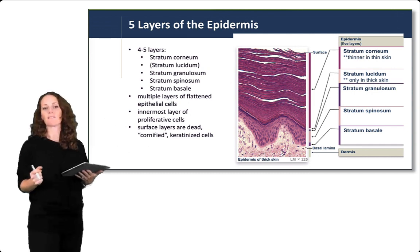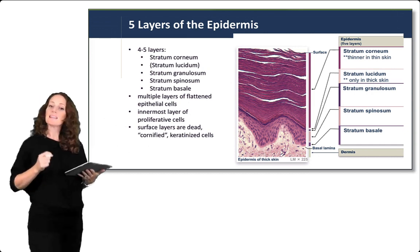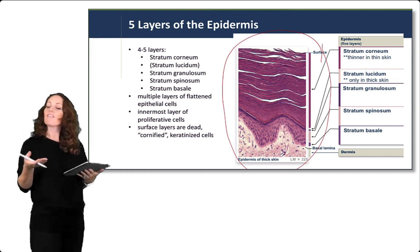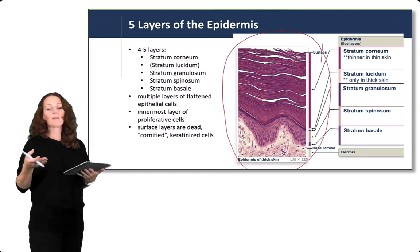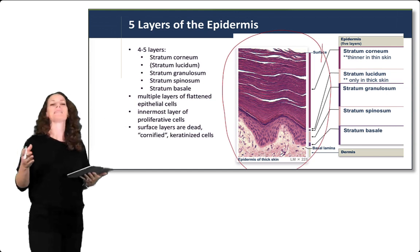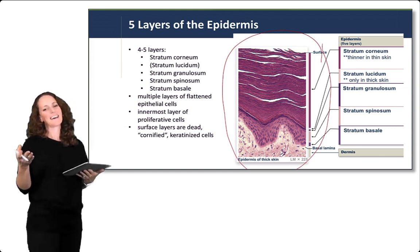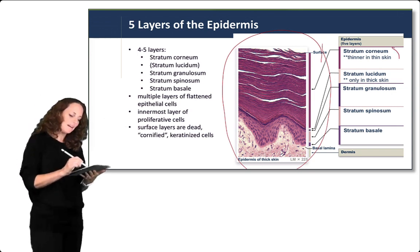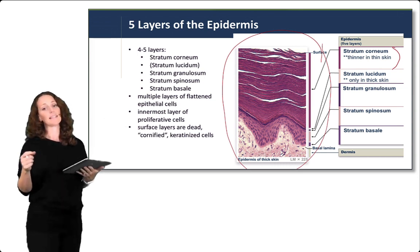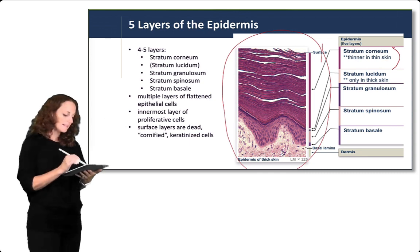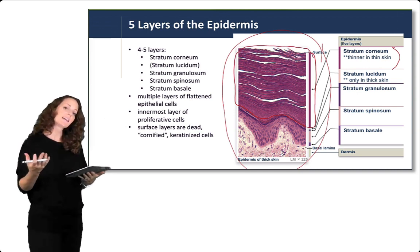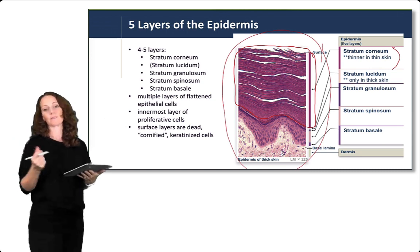Let's look in detail at the five layers of the epidermis using a microscope image of thick skin. The outermost layer is the stratum corneum — this is the keratinized layer of dead cells at the outermost surface of the skin. Because this is thick skin, the stratum corneum is a very thick, many-layered structure.